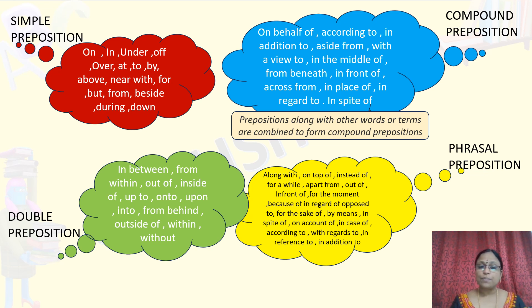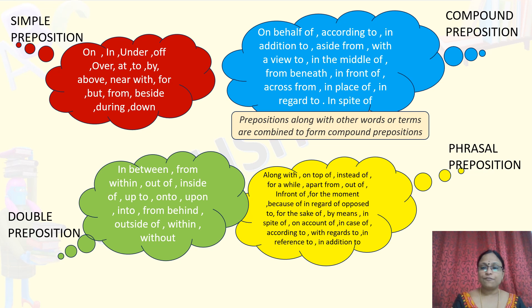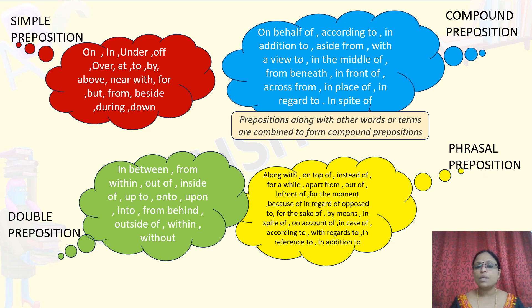And the last one is phrasal preposition. Phrasal preposition is a combination of a preposition, a modifier and its objects. In simple words, it can be defined as a phrase which begins with a preposition and ends in a noun, pronoun, or noun phrase. For example: on the table, by the sea, and some examples are given here.